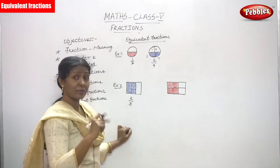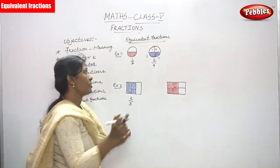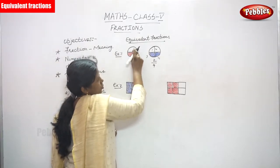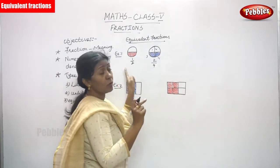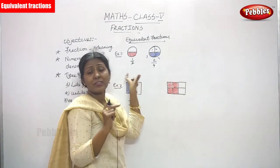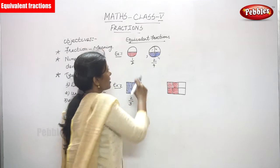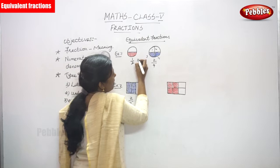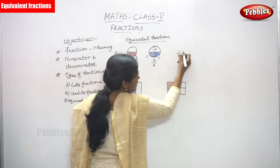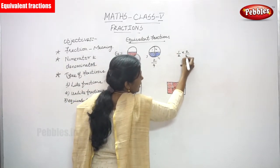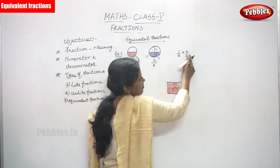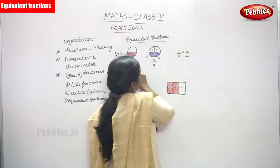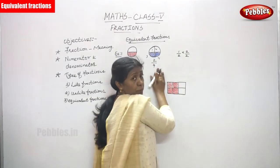So here I drew the circle — a whole thing. After that I cut it into equal halves, but I shaded only one portion. So the total portions is 2, but I shaded only one portion in red. So the fraction is 1 by 2. Now look at this: 1 by 2, multiply the numerator by 2 and the denominator by 2 — take the same number.